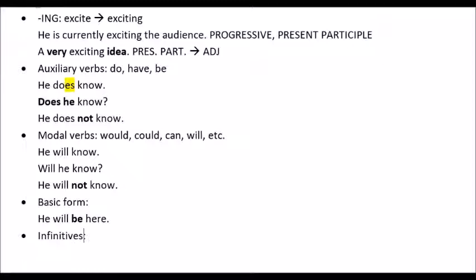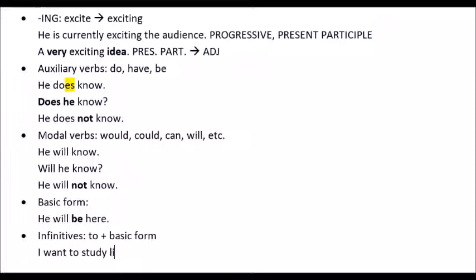Finally, we have infinitives, which is to — not quite a suffix — plus a basic form of a verb. I want to study linguistics. It has a variety of functions we don't have time to cover, but these are the verb forms and verb types that you need to know. Slow down and watch it again — I know I went fast. Good luck.